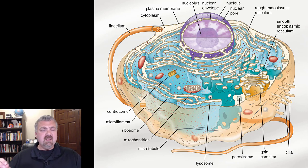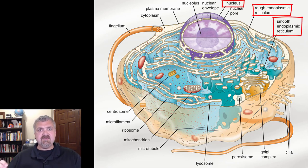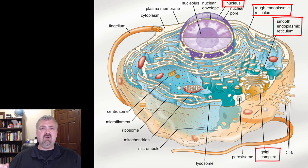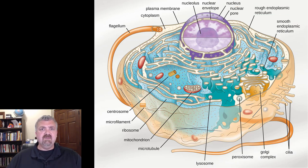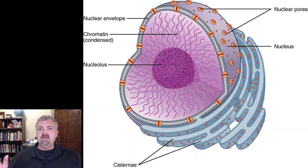I'm primarily going to focus on the nucleus and the rough and smooth endoplasmic reticulum and the Golgi apparatus — also called the Golgi complex, so you'll see different terms sometimes.